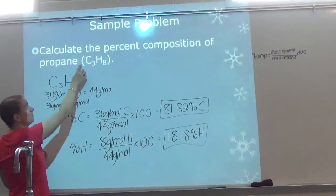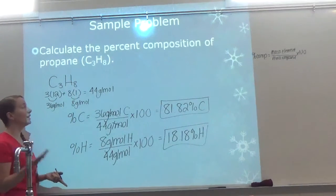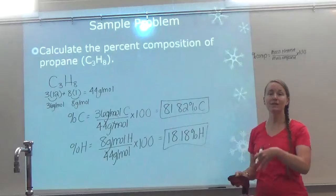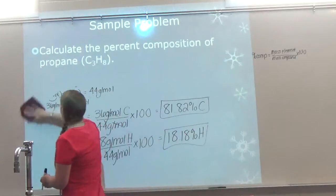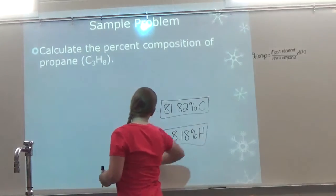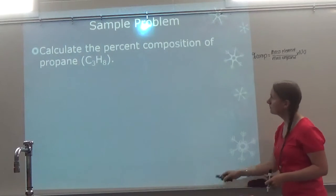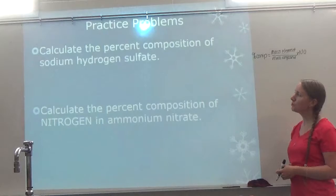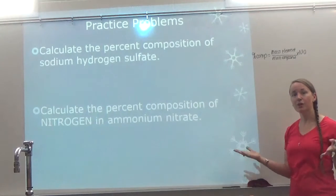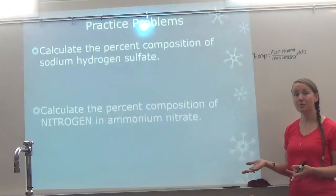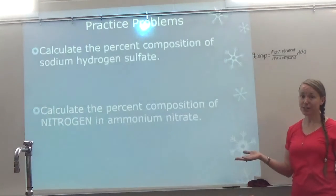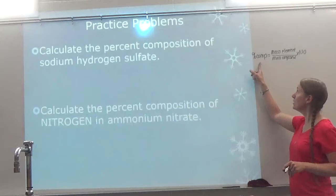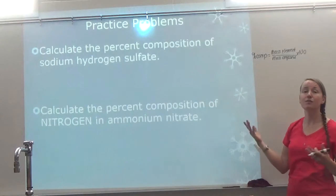Common mistakes on this type: putting in 12 for carbon because you forget to multiply by the subscript, or putting in 1 for hydrogen. Other common mistakes occur if I give you the name instead of the formula — a lot of people have trouble writing the correct formula. If you're having trouble writing formulas from names, you need to go back to Chapter 9 lesson videos. That's the most common reason people miss it on a test — they know how to use the formula and pull masses from the periodic table, but they get the formula wrong.